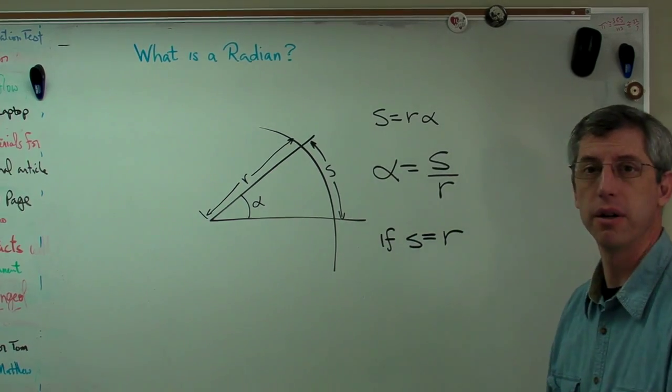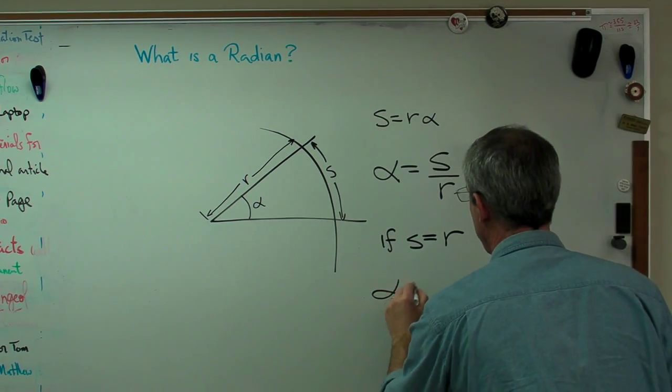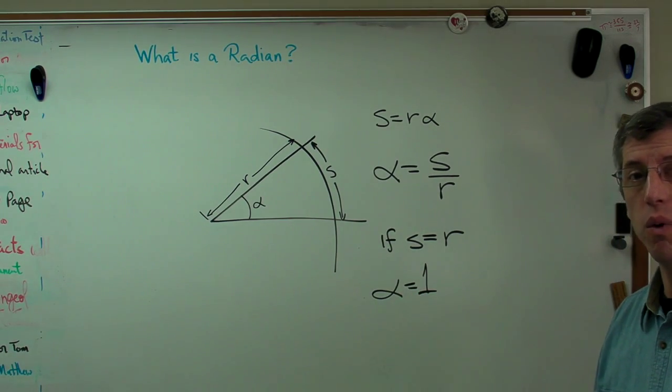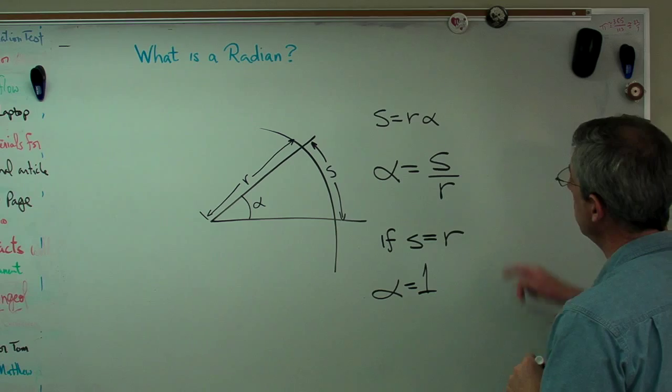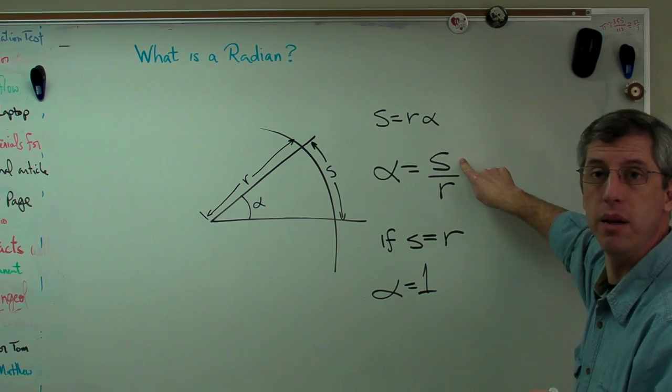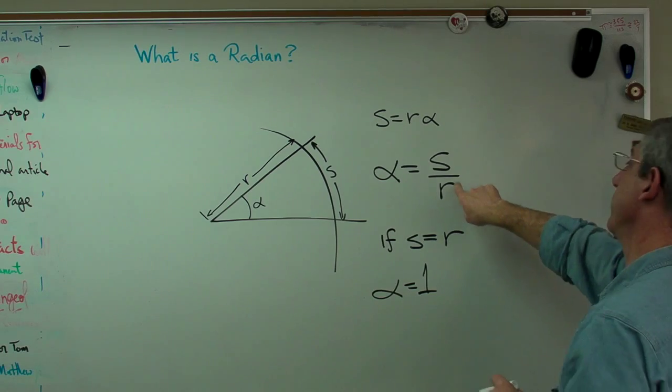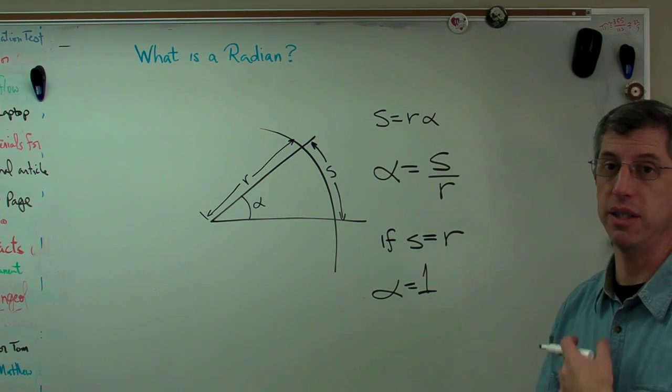Well, what if s equals r? Then alpha equals 1. Not only does it equal 1, it's also unitless because this could be in meters and meters, or inches and inches, or mega parsecs and mega parsecs. It doesn't matter.